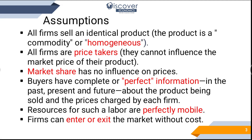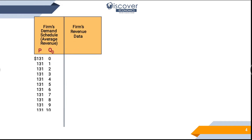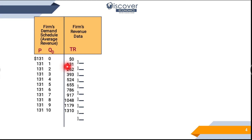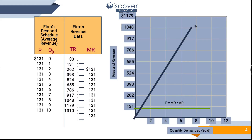Prices are predetermined, so price is already set — no matter how little or how much you produce, it has nothing to do with prices. Total revenue is P × Q: 131 × 1 = 131, 131 × 2 = 262, 131 × 3 = 393, and so on. Marginal revenue is the change in total revenue: (262 − 131) ÷ (2 − 1) = 131. So marginal revenue is the additional revenue obtained from each next unit produced.